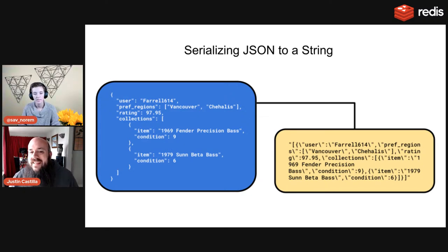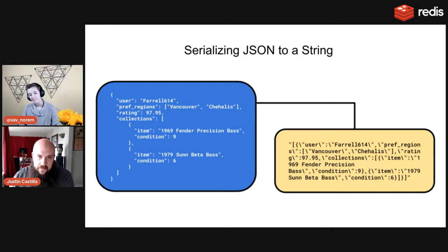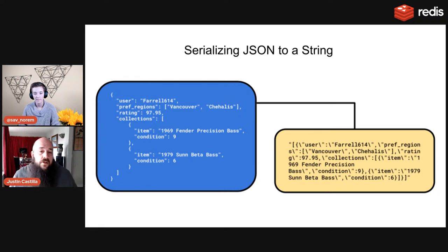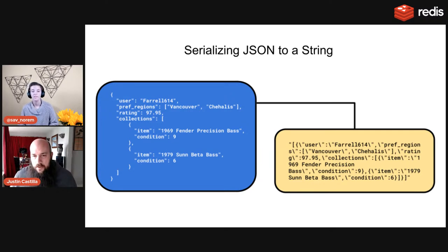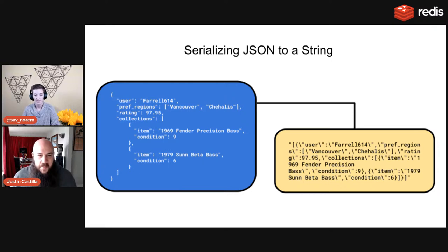Those are two big bottlenecks. And if you want to update a value, delete a value, or add a property, you have to deserialize it, change the JSON object, serialize it again, and put it back in. That's really slow, and Redis hates being slow. So we saw the need for something better.